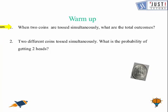So here when two coins are tossed simultaneously, what are the total outcomes? For two coins it's four. It can be two heads, two tails, one head and one tail, or one tail and one head.